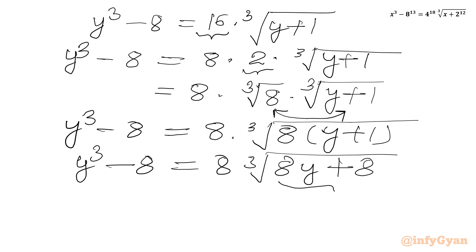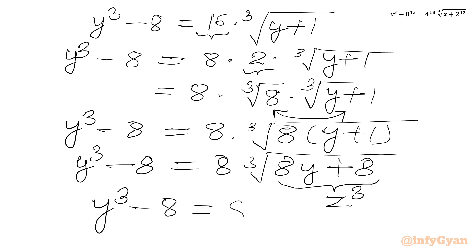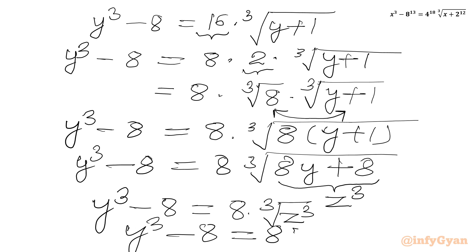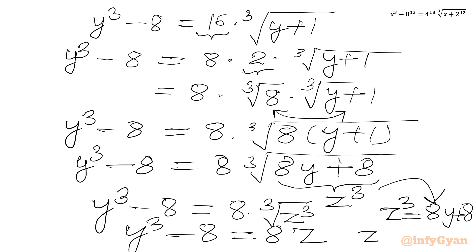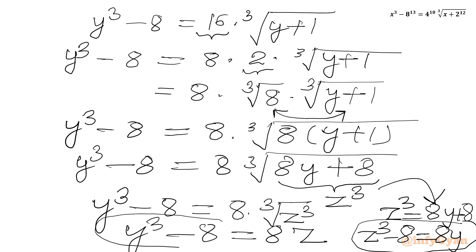Now we consider the substitution: let z³ = 8y + 8. So we can write y³ − 8 = 8 × ∛(z³) = 8z. From the substitution, z³ = 8y + 8, so z³ − 8 = 8y.